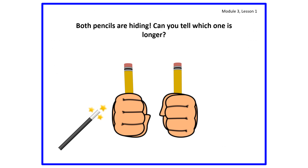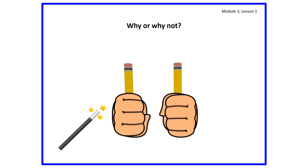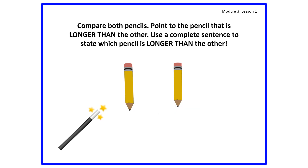Both pencils are hiding. Can you tell which one is longer? Why or why not? Is it because the hands are covering the pencils? That's a good observation. What happens if I remove the hands from the pencils? Now you can see both pencils clearly.